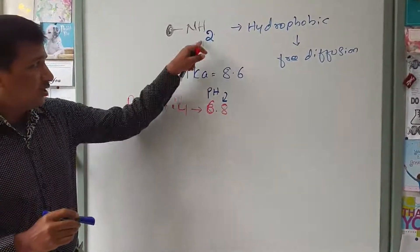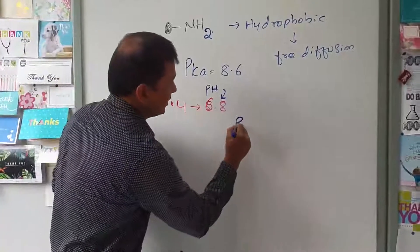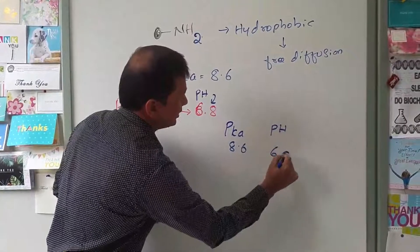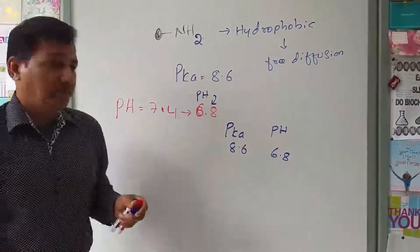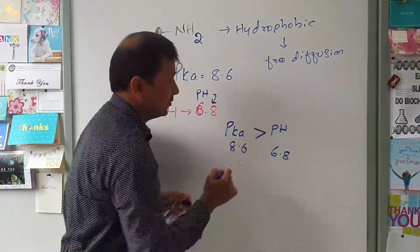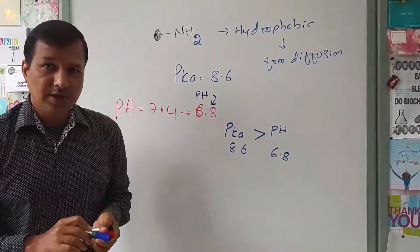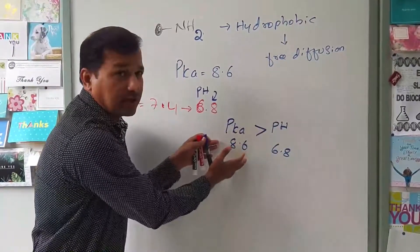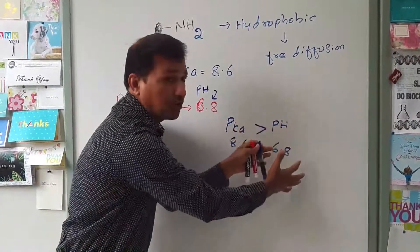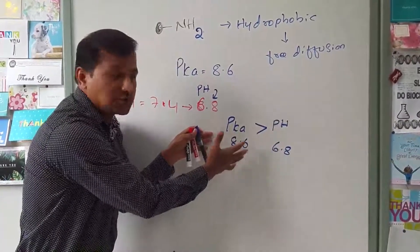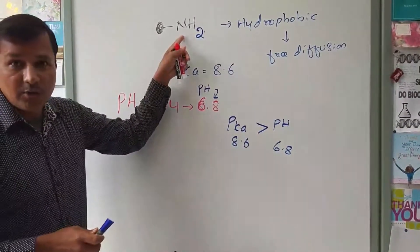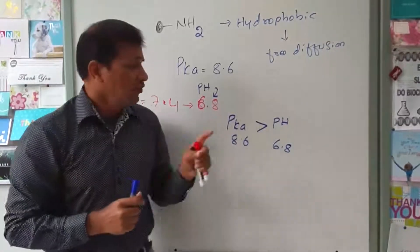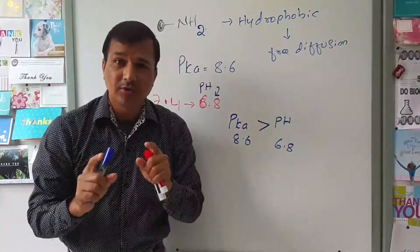The pKa of the amino group is 8.6 and the pH is 6.8. Since pKa is greater than pH, it means the solution has more protons relative to the amino group. So the amino group will undergo protonation. When pKa is less than pH, there will be deprotonation — that is a fundamental rule to remember.